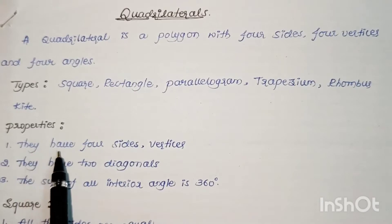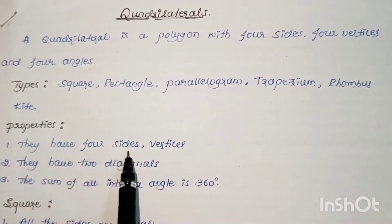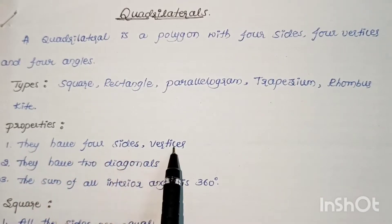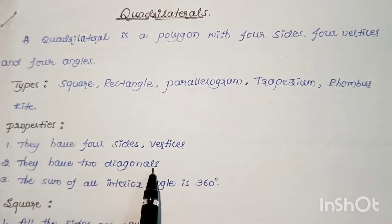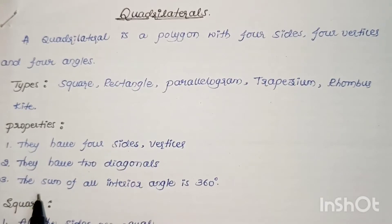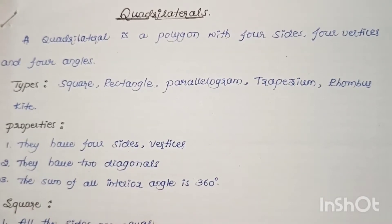Quadrilaterals always have four sides and four vertices. They will have two diagonals, and the sum of all interior angles is equal to 360 degrees.